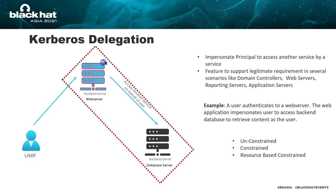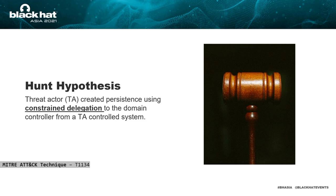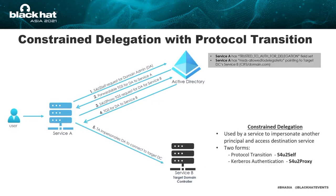The hypotheses we are sharing today are based on constrained delegation and RBCD. The first hypothesis is that a threat actor has configured constrained delegation to maintain persistent access to the domain controller. Constrained delegation is configured on the front-end server — in our example, the web server or Service A — which defines which services Service A can access as part of delegation. I'm talking about a specific case of constrained delegation with protocol transition enabled, implemented using two features: S4U2Self and S4U2Proxy.